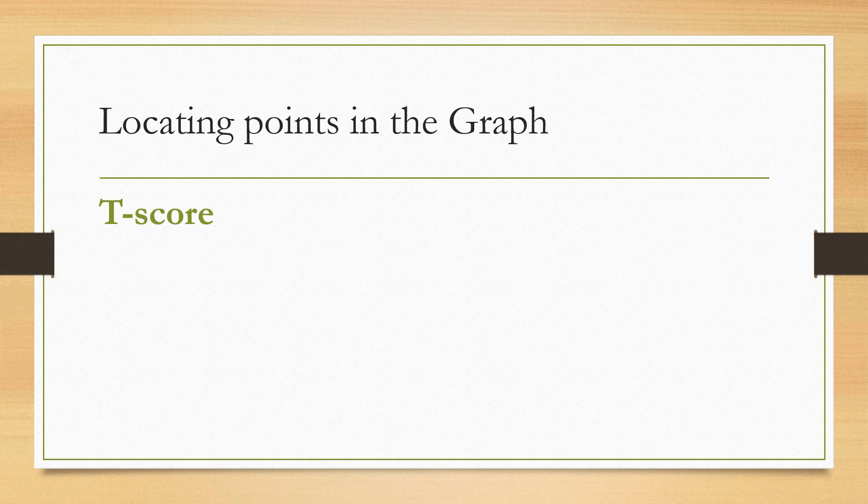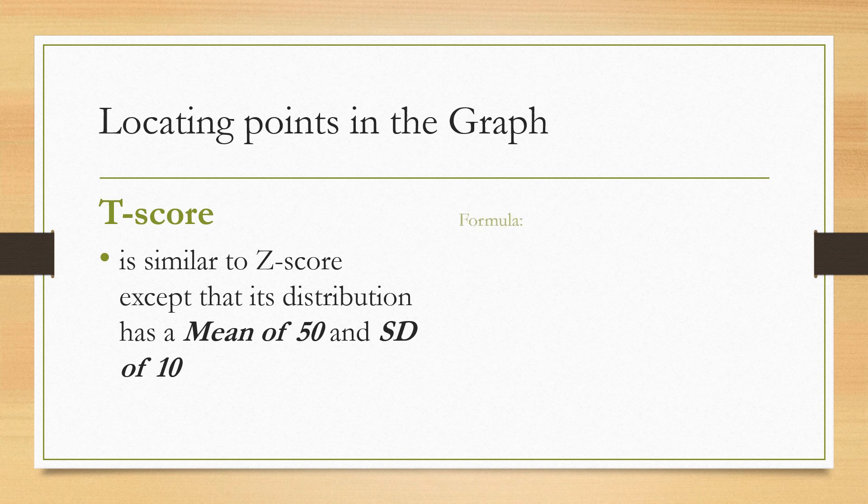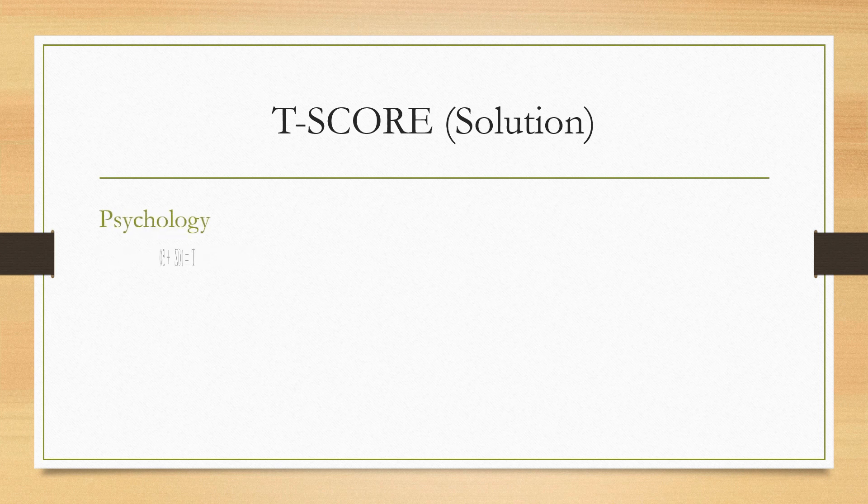T-scores of Chan in psychology and in history can be computed because the Z-scores are already known. Use the formula given. Compare the T-scores in two subjects. Now, T-score is similar to Z-score except that its distribution has a mean of 50 and SD of 10. The formula is T equals 10Z plus 50.